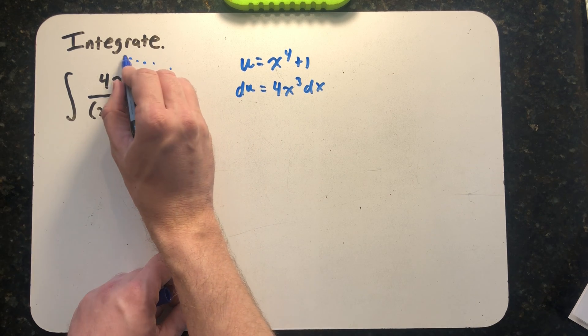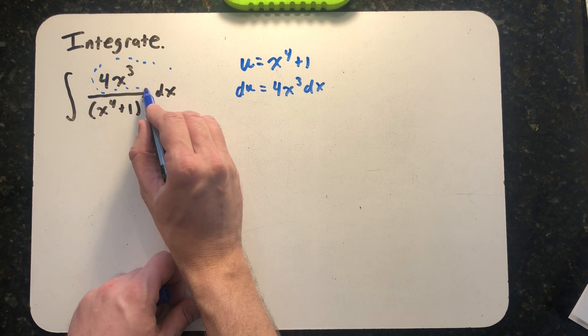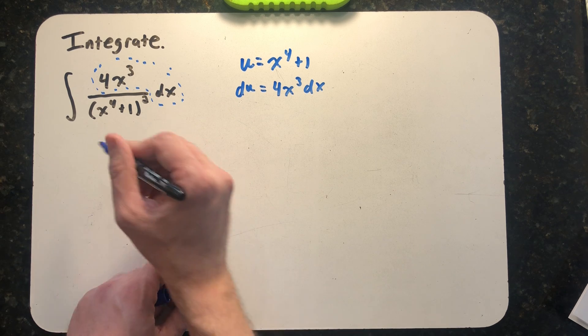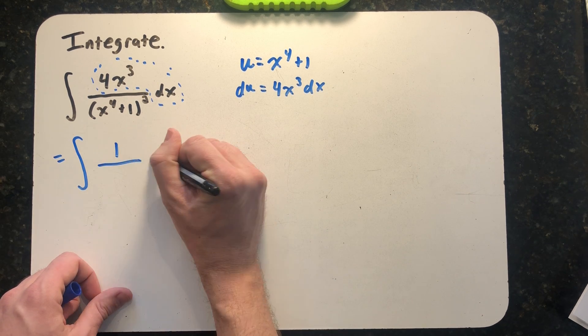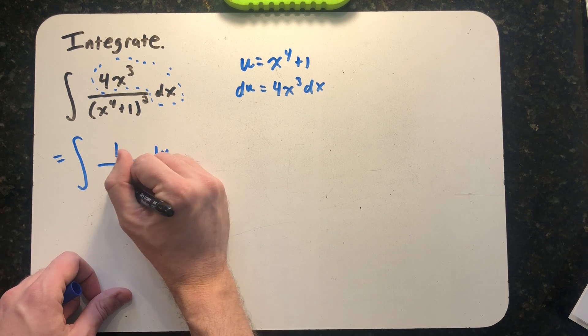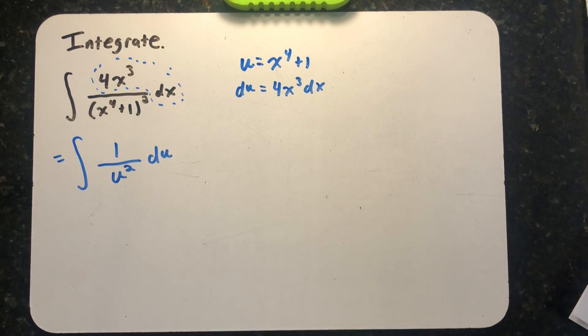When I do my substitution, I see that 4x³dx is just equal to du, and on the bottom I just have u². Now I need to find the anti-derivative of u², which I would think about as u⁻².